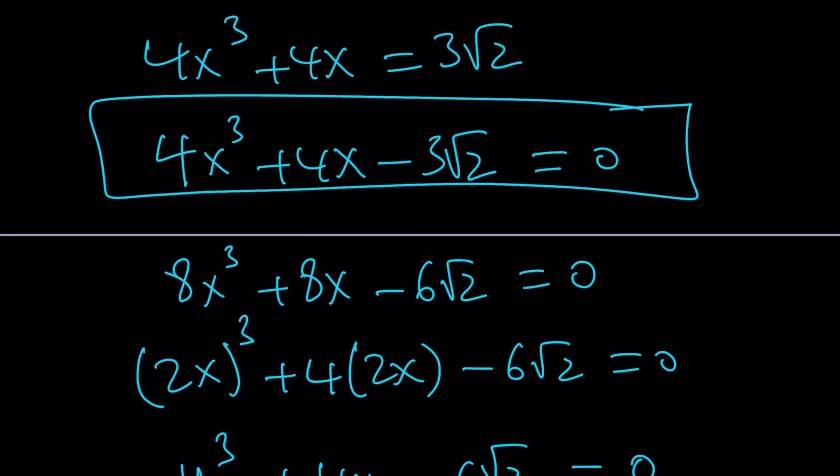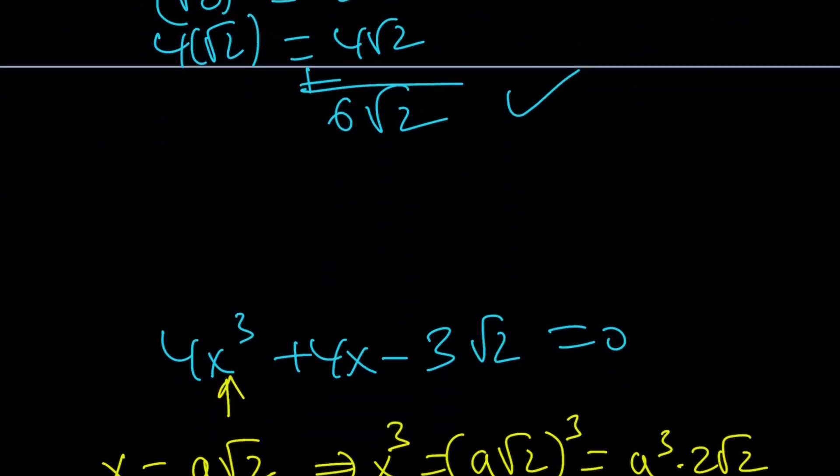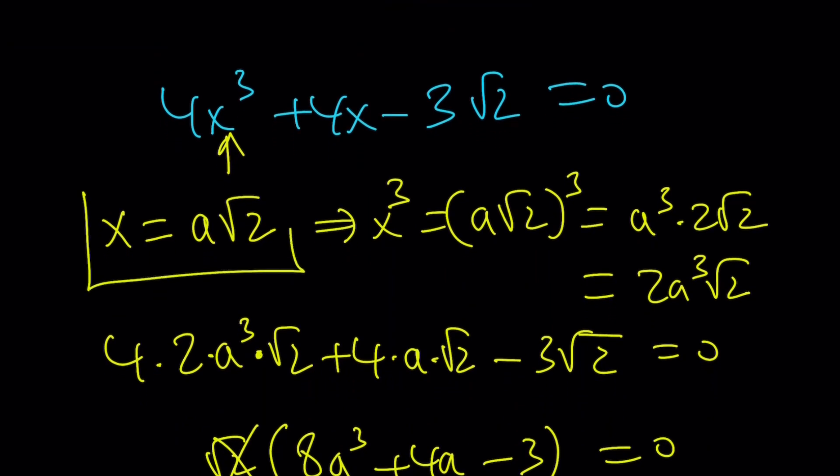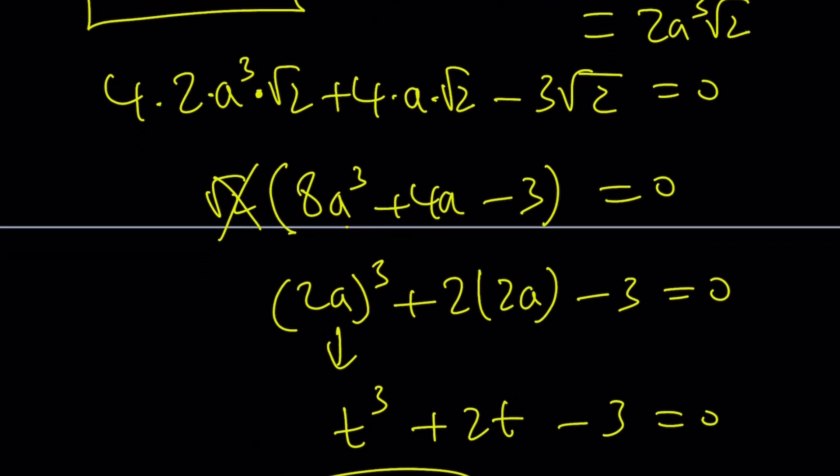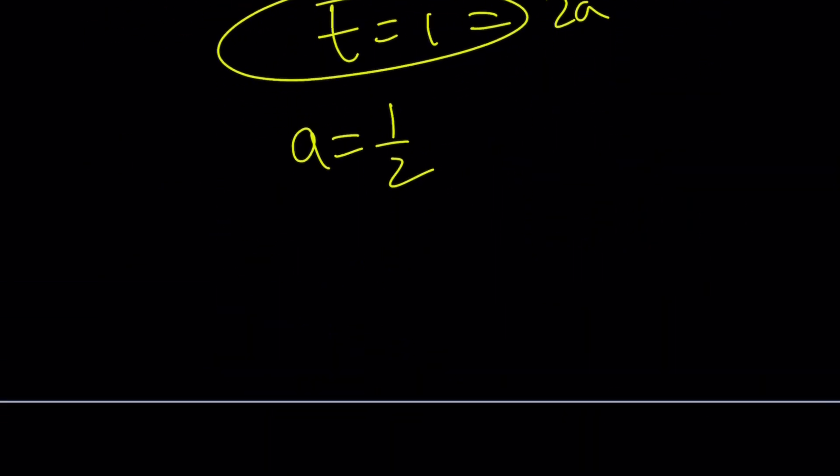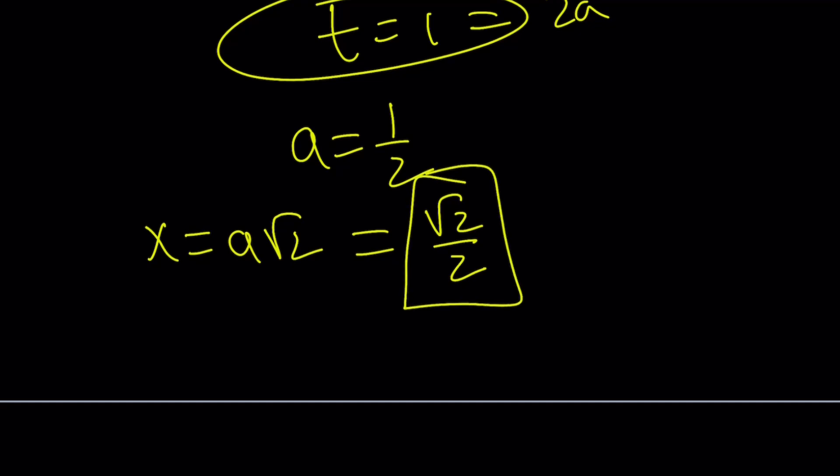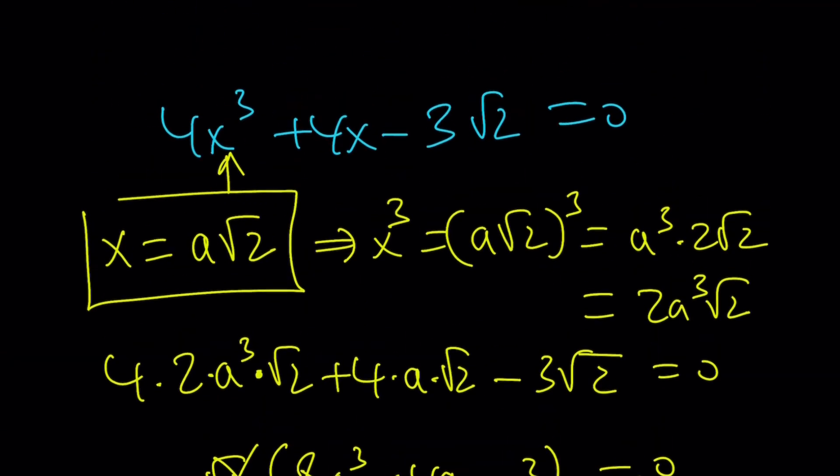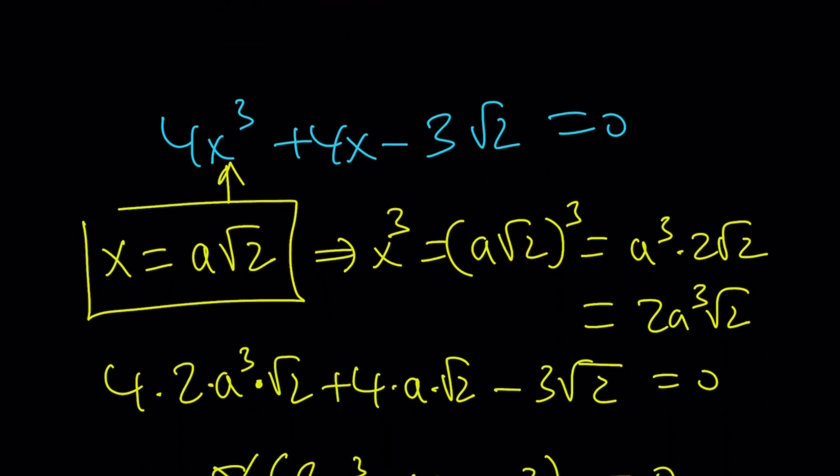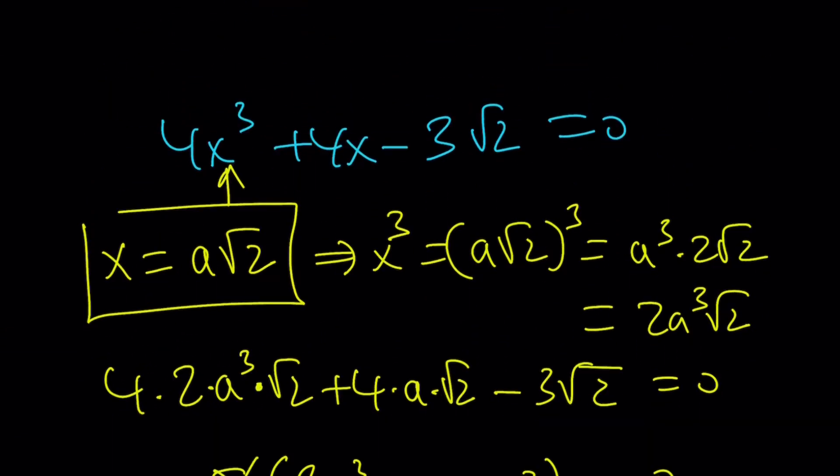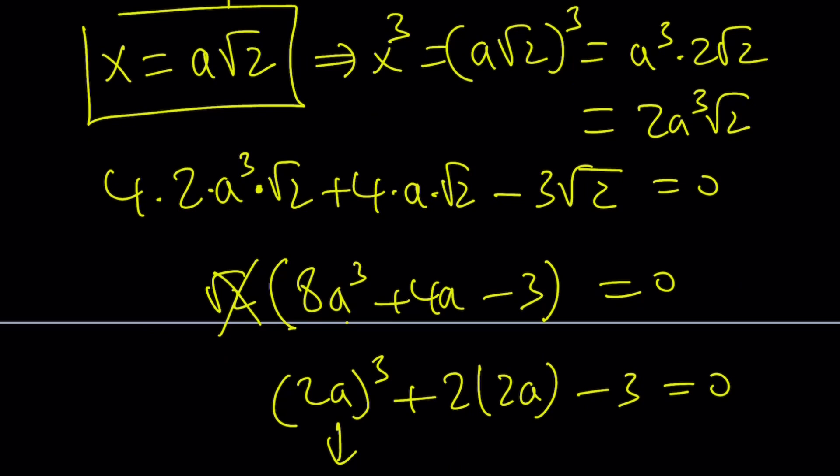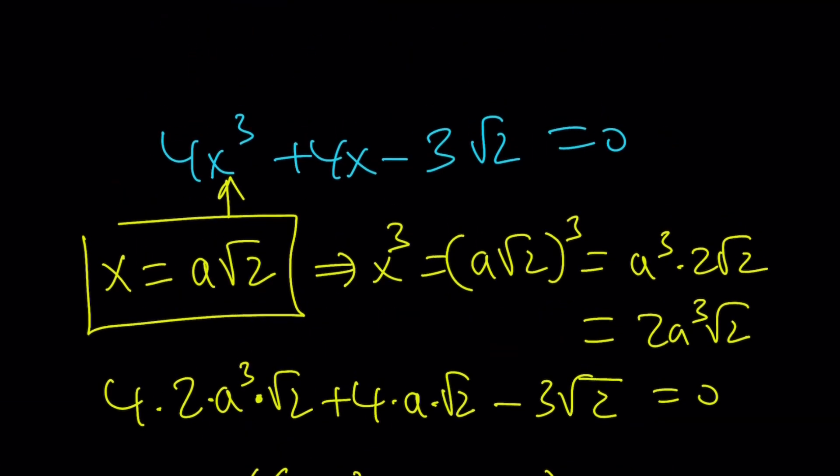So a = 1/2 is a solution of this equation. But wait a minute. Where does the a come from? I was supposed to work on this equation, right? 4x³ + 4x - 3√2. But I just assumed x = a√2. So I got a = 1/2. And let's write this. x = a√2. So x is √2/2. Wow. That's great. So √2/2 seems to be a solution to this equation. And I'm going to show you on the graph that it works. But how does this work from a functional standpoint? Is that the only real solution, right? Let's go ahead and take a look at that.